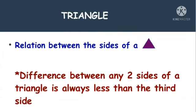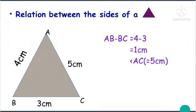We have another relation too: the difference between any two sides of a triangle is always less than the third side. For example, in triangle ABC, AB = 4 cm, BC = 3 cm, and AC = 5 cm. AB minus BC equals 4 minus 3, which is 1 centimetre, and that is less than AC, which is 5 centimetres. So the difference of any two sides of a triangle is always less than the third side.